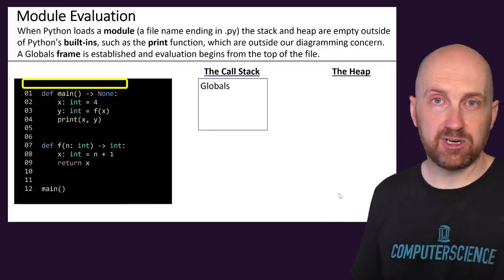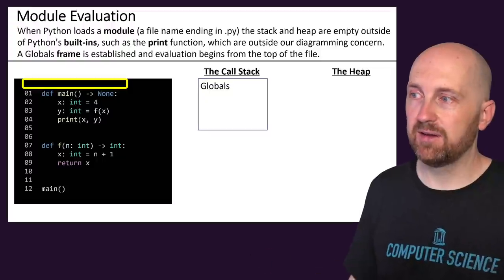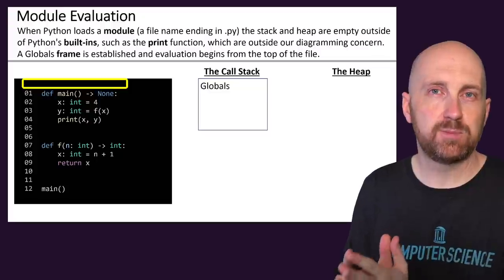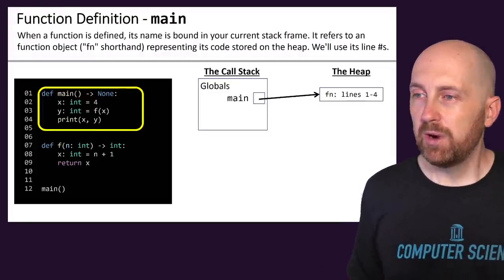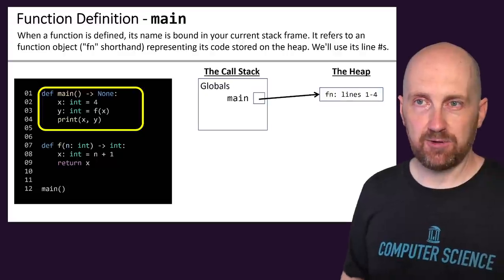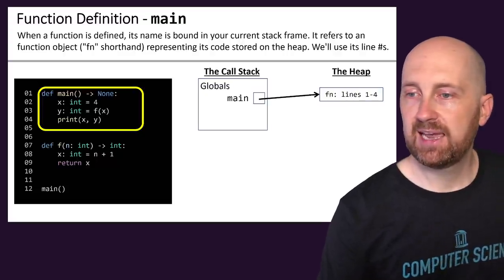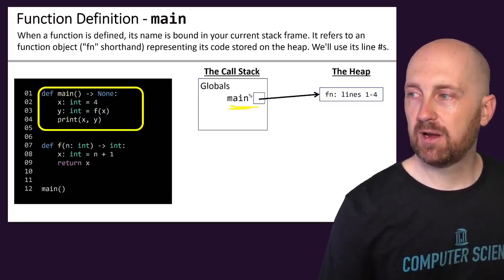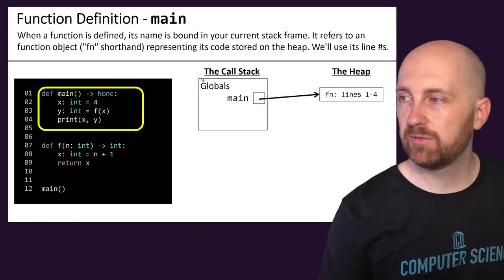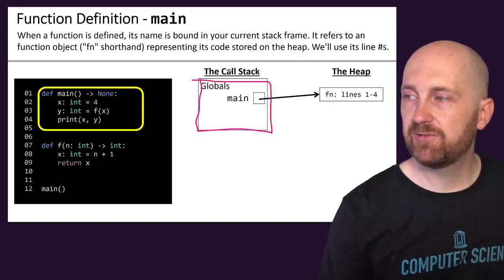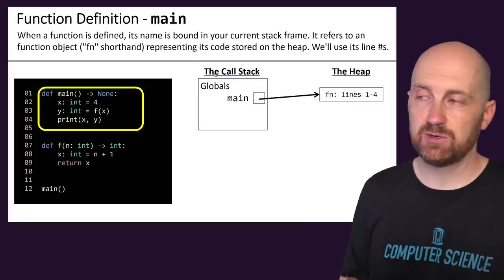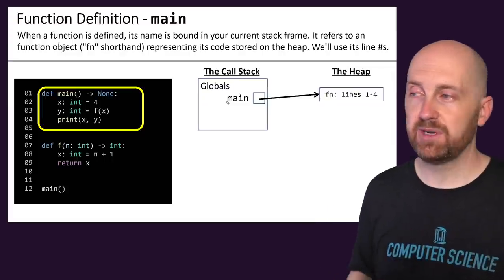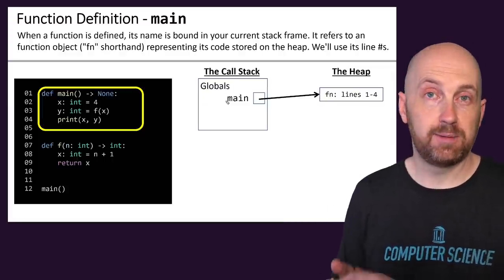There are also some built-ins — for example, print is technically already defined at this point — but we're not going to worry about built-ins; we're only focused on what is important to our program specifically. When a function definition is encountered, we're going to take its name and bind it in our current frame on the stack. We call this a frame, and each frame has some context associated with it. This frame is the globals frame, and inside it, any names we define — like functions — are going to be bound here.